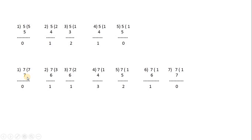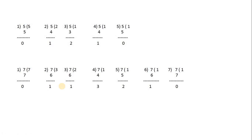For n=7, we check divisibility: dividing by 1 gives remainder 0, but dividing by 2, 3, 4, 5, and 6 does not give remainder 0. Dividing by 7 gives remainder 0. So we got exactly two zeros — two factors: 1 and 7. Therefore 7 is also a prime number.